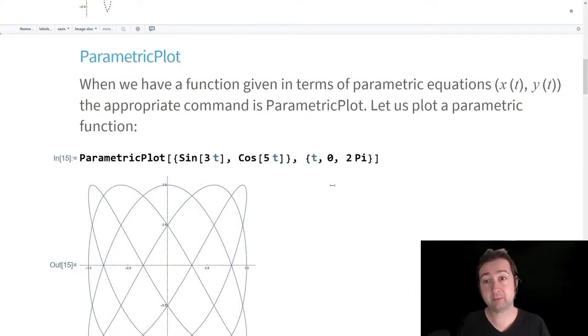The next function we'll talk about is parametric plot. Parametric plot works best for parametric equations, which are equations where we have x of t and y of t. The points are being described as functions of an independent variable t. Oftentimes, these functions are thought of paths of objects moving through space.